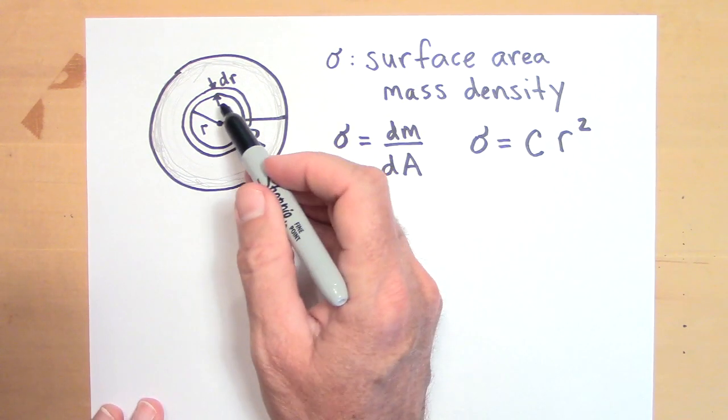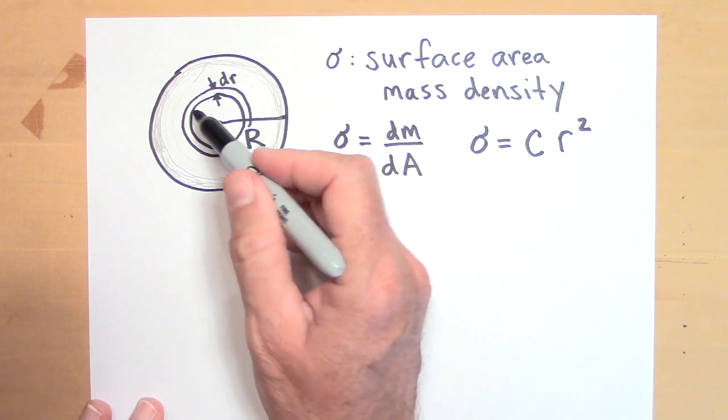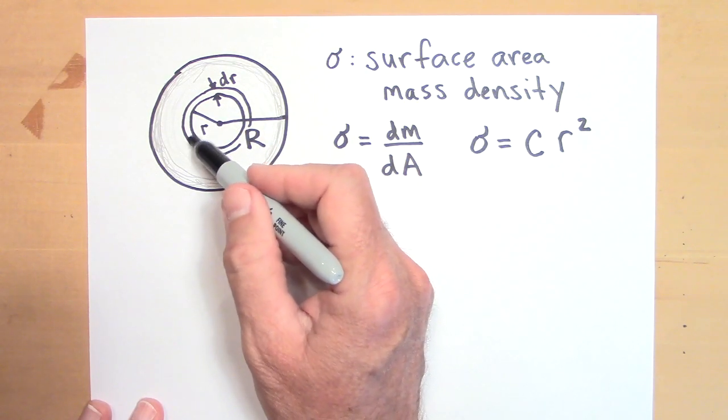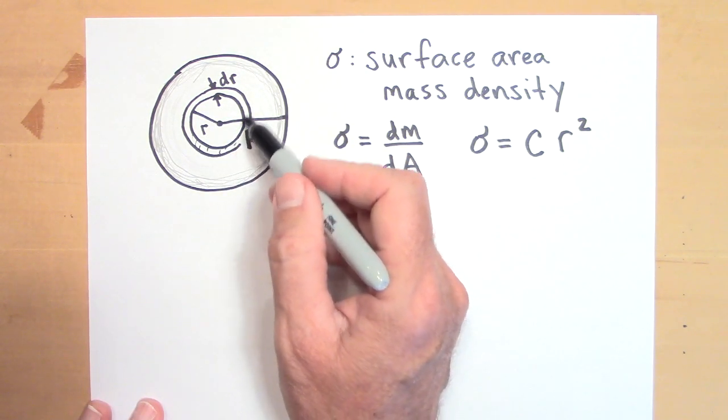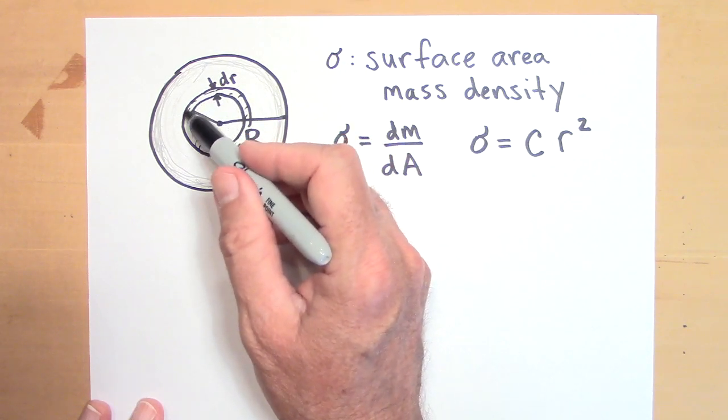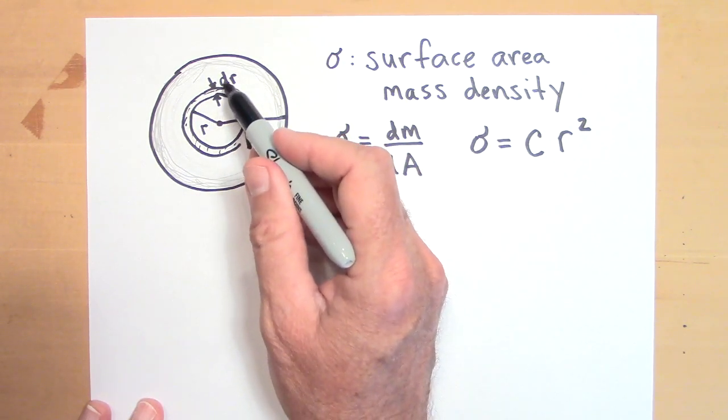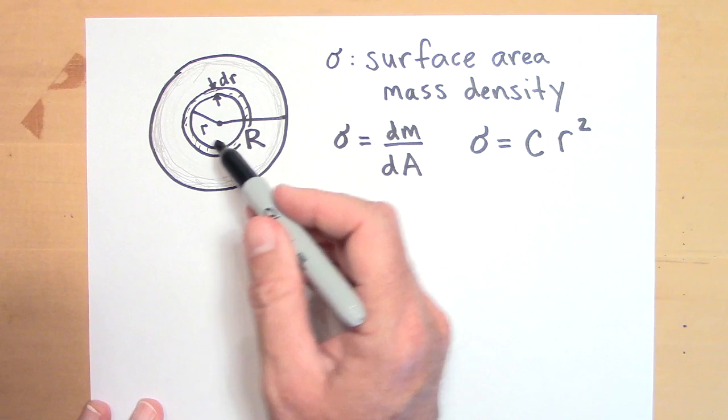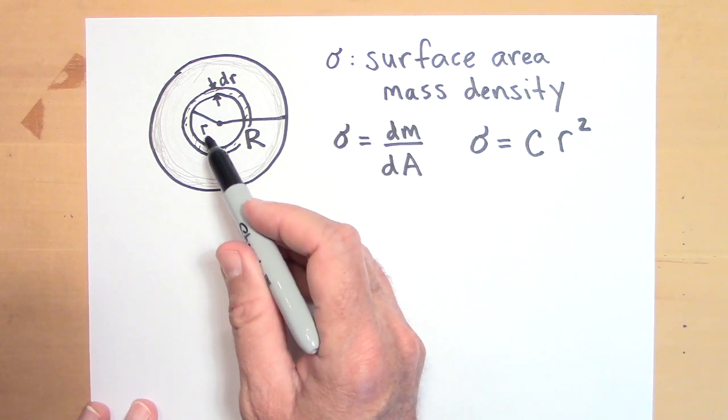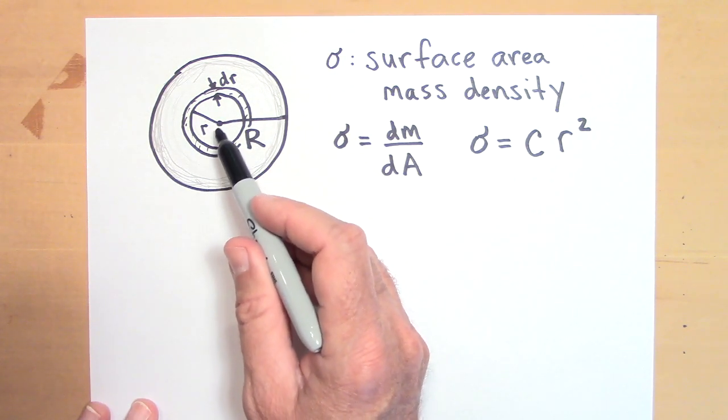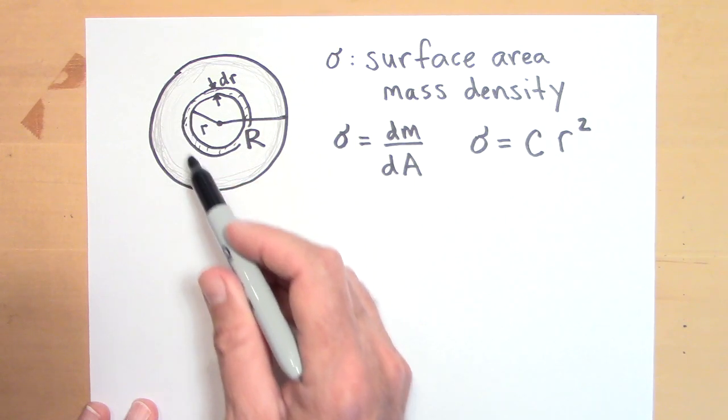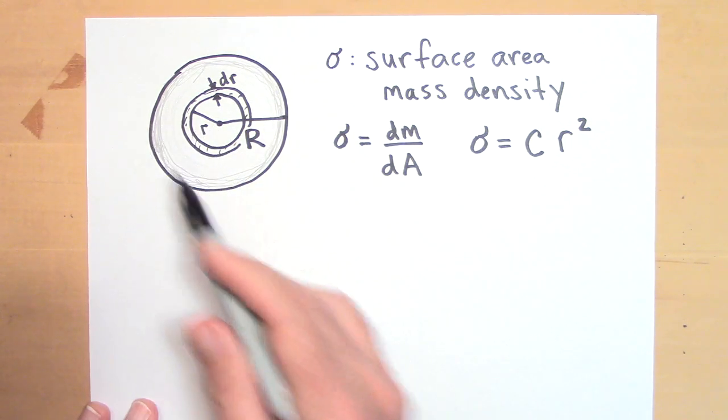Okay, so what I'm going to do is I'm going to take a ring, and I'm going to find the rotational inertia of just this ring here. And so that's going to be a very thin ring. So it's dr thin, but it's got a radius of little r. Now that little r is a variable. As you go out, it's going to get bigger and bigger and bigger.